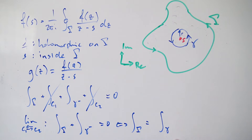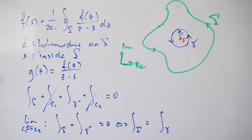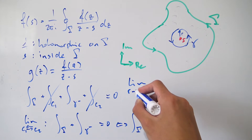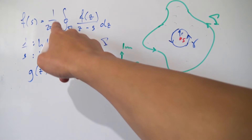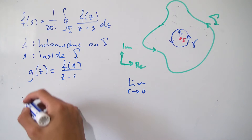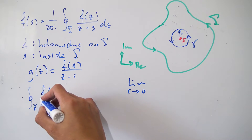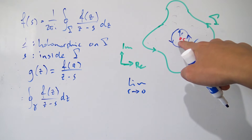What we've just shown is that the integral along big gamma is the exact same thing as the integral along this smaller circle in the positive direction. I'll call this smaller path little gamma from now on. Notice our radius r can really be anything — the value of the integral stays the same no matter how big or small we make r. Later we'll let r go to zero. The integral along gamma equals the contour integral along little gamma of f(z) over (z minus s).